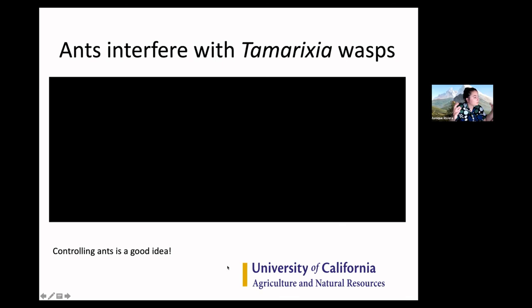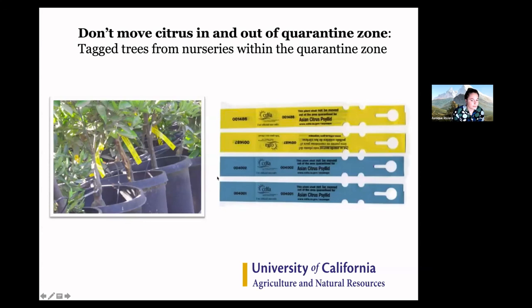To protect against HLB spreading, as humans, we should not move citrus in and out of the quarantine zone. Nurseries will have tags if their plants are not supposed to be moved around — the tags basically say this was in the ACP quarantine area, please don't move it around. We don't want psyllids moving around.